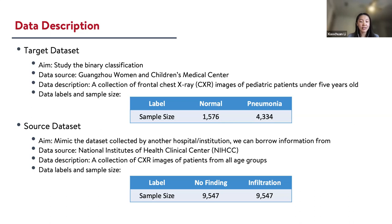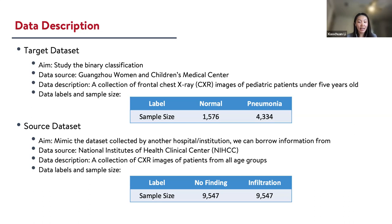These two datasets differ in many aspects. The target dataset is collected from a women and children's hospital in China, while the source dataset is published by the National Institutes of Health Clinical Center in the USA. The images in the target dataset are from patients under five years old, while the source dataset covers all age groups. The two classes in the target dataset are normal and pneumonia, while the source dataset uses no-finding and infiltration. The target dataset is small and imbalanced, while the source dataset is large and balanced.